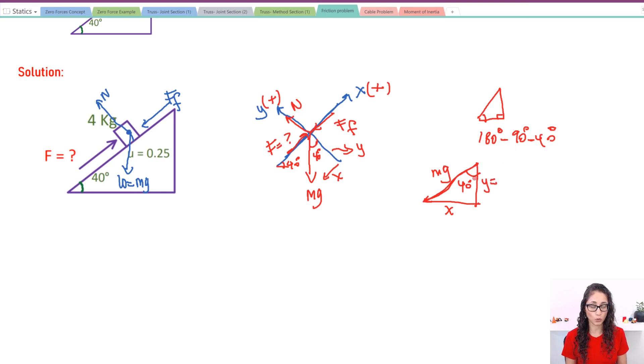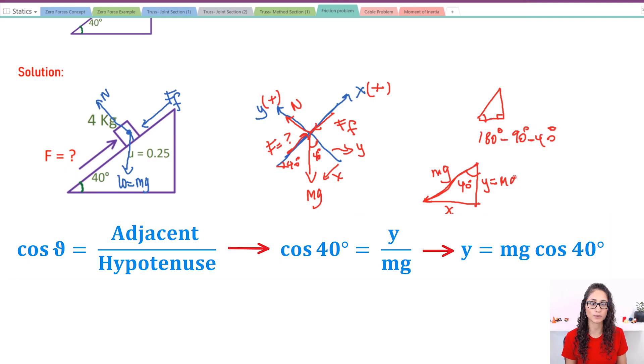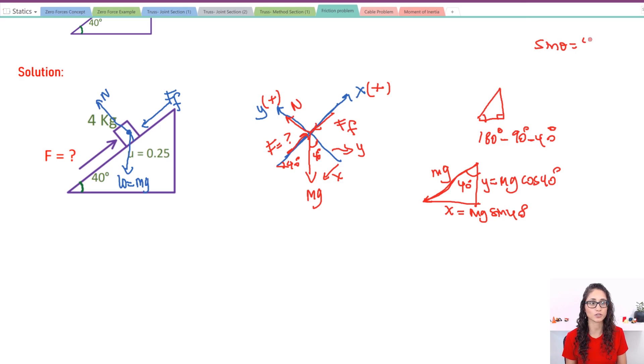So if I want to use the Y, we need to use cosine, right? Because we always use the adjacent. Now for the opposite, we usually use sine, right? So I have Y is equal to mg cosine 40. And then here I'm going to have mg sine 40. Because remember, if you guys remember this from trigonometry, we have sine theta is equal to opposite over hypotenuse. And then cosine theta is equal to adjacent over hypotenuse. So that's what we pretty much did here. So I have Y is equal to mg cosine 40 because it's the adjacent. For the opposite we use sine. These are those two components.